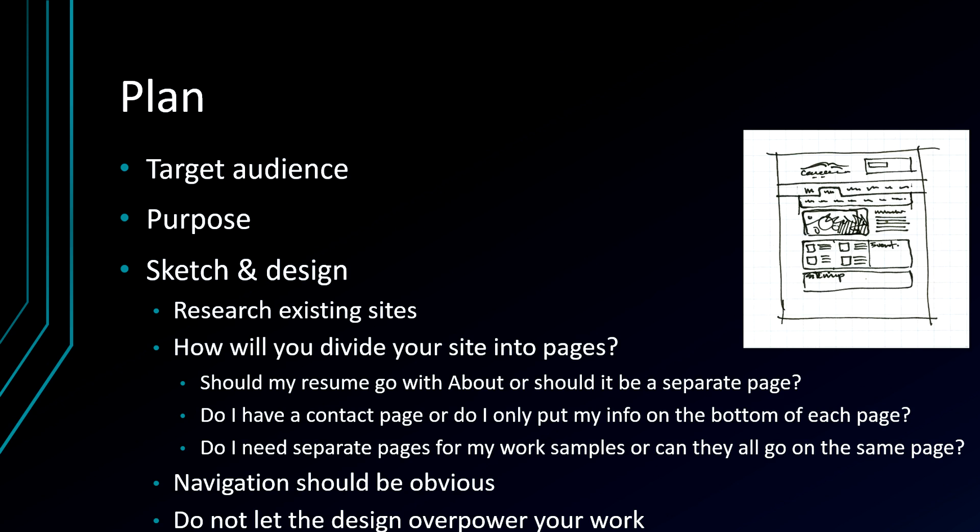Whatever you decide to do to split up your website, make sure the navigation is obvious. They need to be able to find it, read it, and understand it. Don't hide tabs under tabs. If you can, make everything top level as much as possible — nice big text so people can read it, and make sure they can find it. Usually top of the page, though sometimes you can go to the left or right and have a bar.